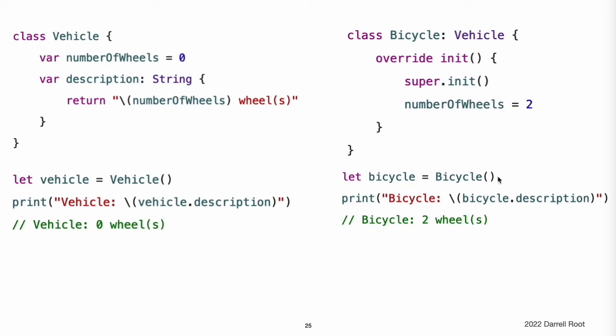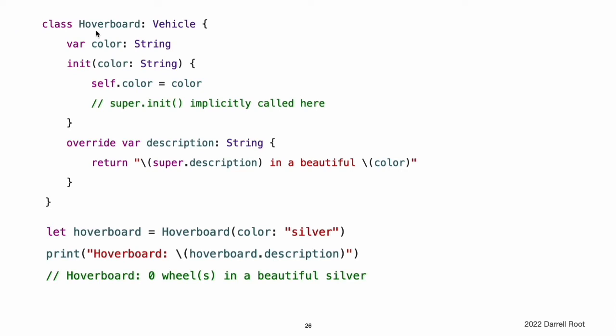If you create an instance of Bicycle, you can call its inherited description computed property to see how its numberOfWheels property has been updated. If a subclass initializer performs no customization in phase 2 of the initialization process and the superclass has a zero-argument designated initializer, you can omit a call to super.init after assigning values to all of the subclass's stored properties. This example defines another subclass of Vehicle called Hoverboard. In its initializer, the Hoverboard class sets only its color property. Instead of making an explicit call to super.init, this initializer relies on an implicit call to its superclass initializer to complete the process.